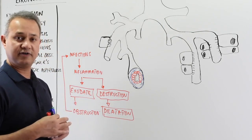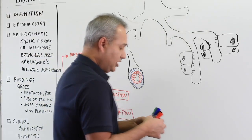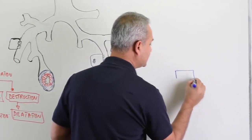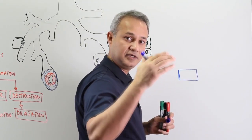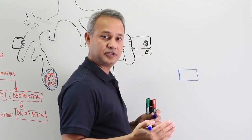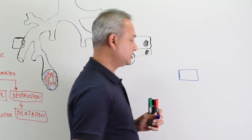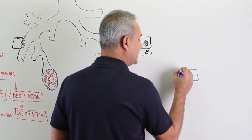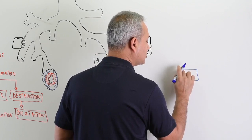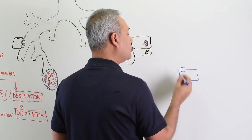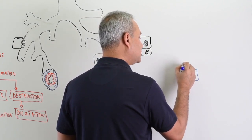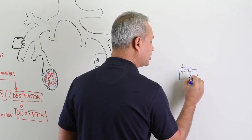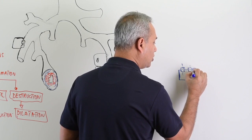In cystic fibrosis, let's consider a normal cell — the cell which makes the lining of the respiratory system or lining of other mucosal membranes. This can affect the GI tract, respiration, and other systems too. This cell has chloride channels which allow chloride to go out and allow sodium to come in. And when sodium comes in, water also comes in.